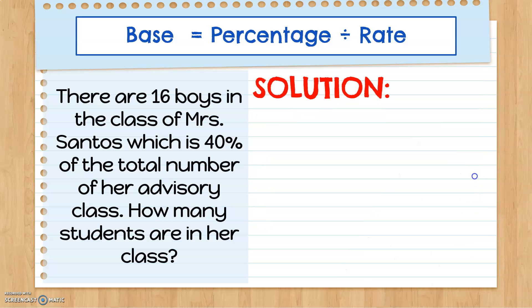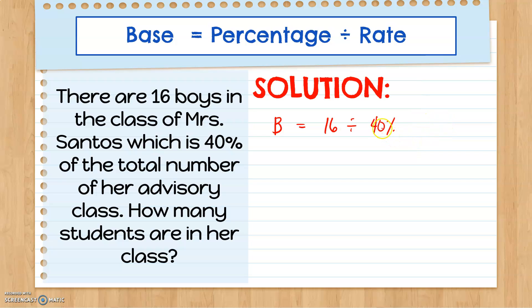Going back to our problem: there are 16 boys in the class of Mrs. Santos, and that is just 40% of the total number of her advisory class. To find the total number of students — which is our base — we use the formula: Percentage divided by Rate. So we have 16 divided by 40%. But we cannot divide by 40% directly, so we must first change 40% into a decimal by moving the decimal point two times to the left. So 40% equals 0.40, or just 0.4.